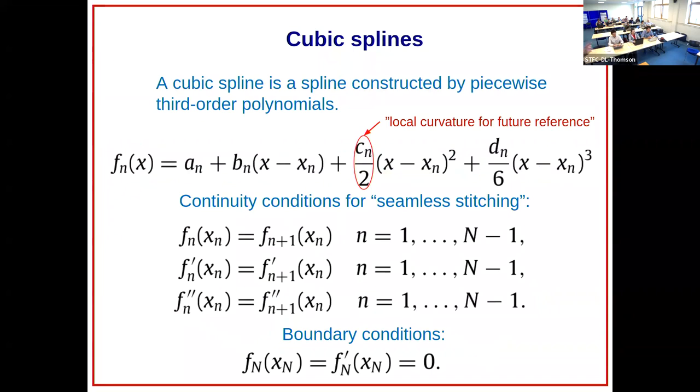For future reference, I'd like to point out that you have these different coefficients, and in front of the second order term you have something that we can think about as the local curvature of these splines. This will be important in the following. Then there are some constraints to make sure this is continuous and you have continuous second derivative and so on.